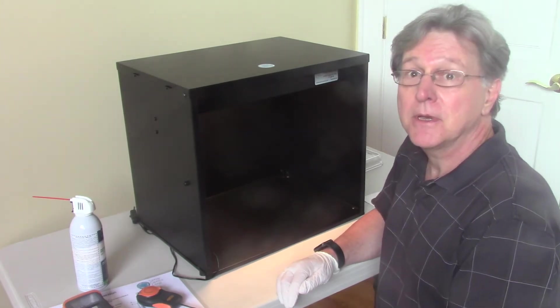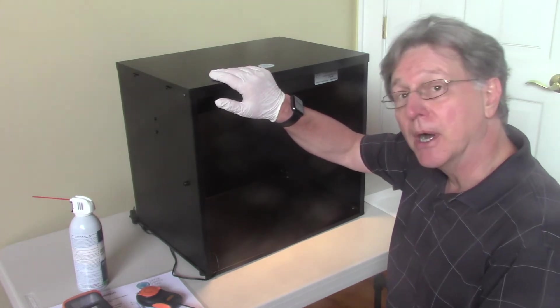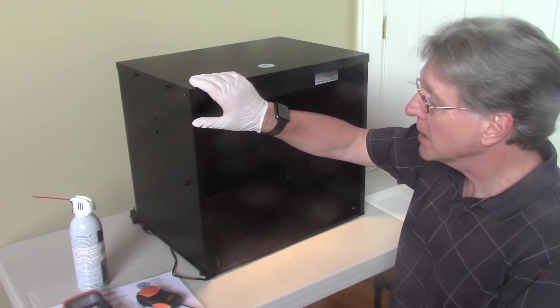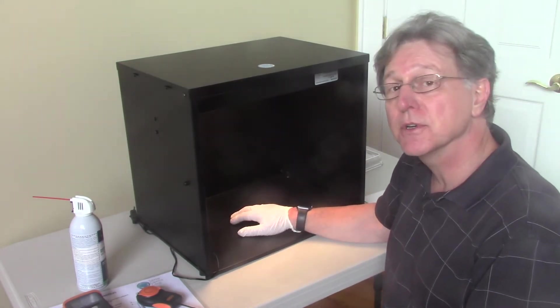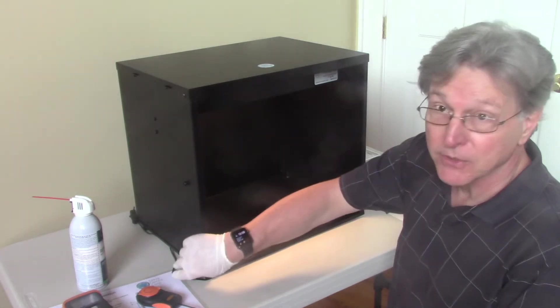This Reflected Light Method is going to be done using an SP11 black box. The SP11 black box is a powder-coat aluminum box constructed of all cleanroom compatible materials with a light source, a dimmer switch, and a power switch.